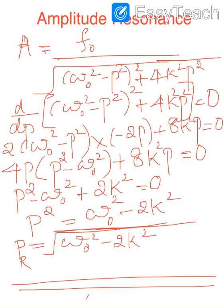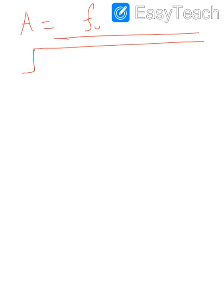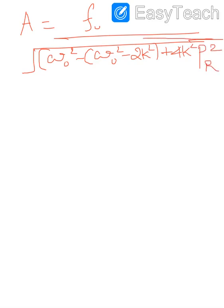Now we find the maximum value of amplitude at the resonant frequency. When the driving frequency equals pᵣ = √(ω₀² − 2k²), the amplitude is: a = f₀ / √[(ω₀² − p²)² + 4k²p²]. We substitute pᵣ² = ω₀² − 2k² for p², giving: a = f₀ / √[(ω₀² − (ω₀² − 2k²))² + 4k²(ω₀² − 2k²)].